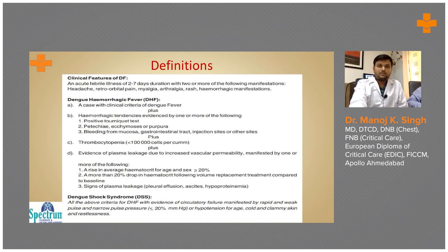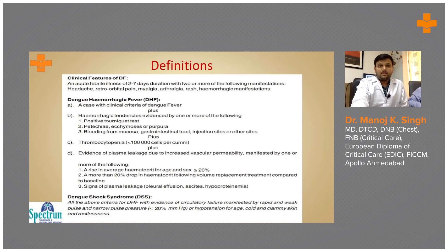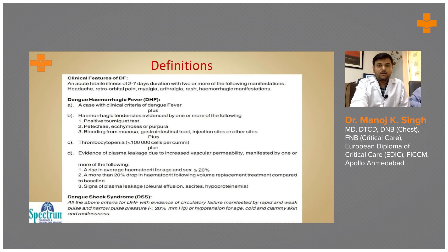These are the definitions of dengue fever. A patient having acute febrile illness with constitutional syndrome is a simple dengue fever. Dengue hemorrhagic fever is dengue fever plus evidence of hemorrhagic tendency, in the form of positive tourniquet test, petechiae, plus thrombocytopenia with platelet count less than one lakh, or evidence of plasma leakage.